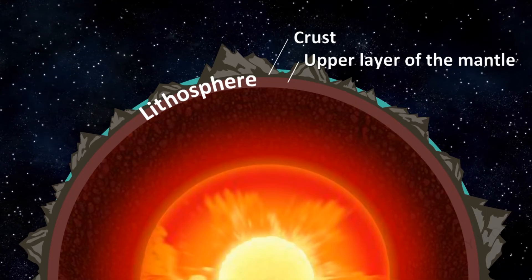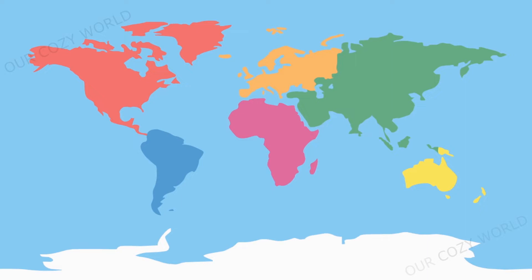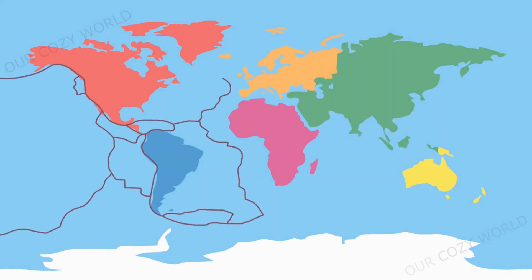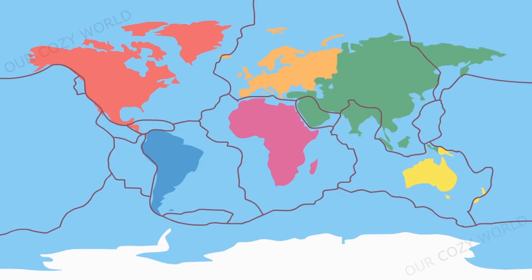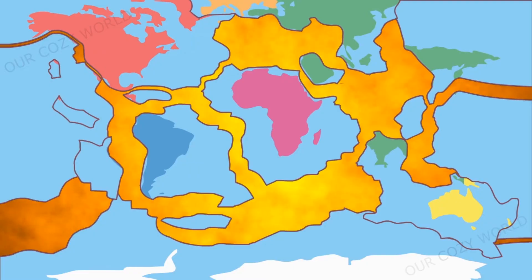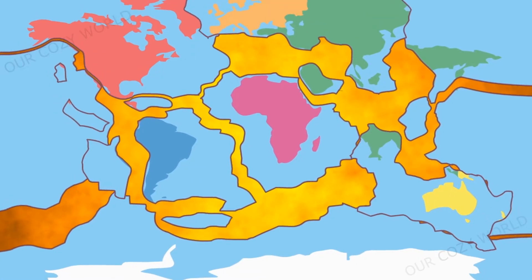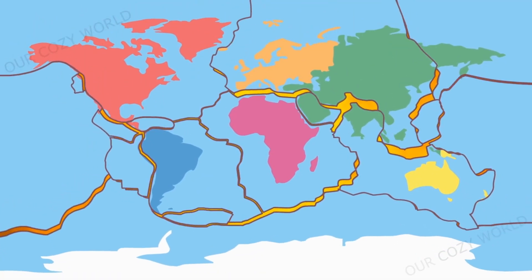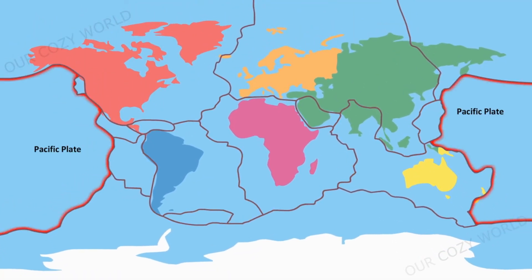This solid rocky layer is broken up into large pieces called tectonic plates. The plates are of highly irregular shapes, of varying thickness and size, but together they fit together like a jigsaw puzzle. There are seven major plates: Pacific, North American, South American, Eurasian, African, Antarctic, and Indo-Australian.